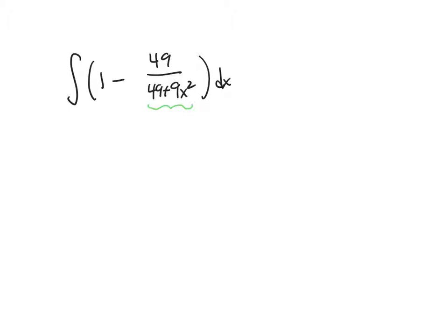So this is basically two integrals. On the left here, we have the integral of 1dx. And we're going to subtract off the integral of 49 over 49 plus 9x squared dx. And this one is a slam dunk. That's just an x. There's a plus c, but we'll group it all together.